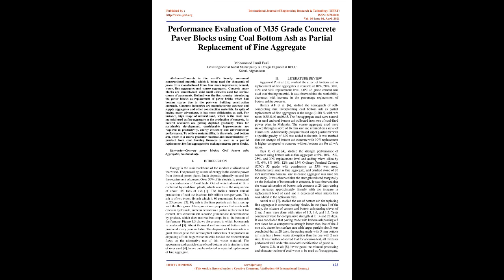Literature Review: Agarwal et al. [5] studied the effect of bottom ash as a replacement of fine aggregates in concrete at 10%, 20%, 30%, 40%, and 50% replacement levels. OPC-43 grade cement was used as a binding material. It was observed that workability decreases with increasing percentage replacement of bottom ash in concrete.